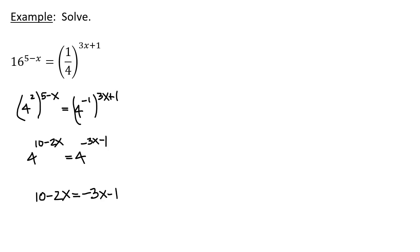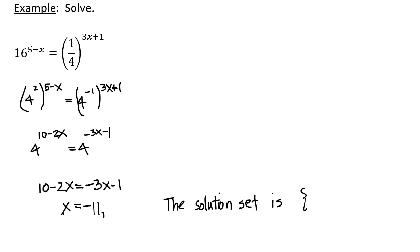So this gives me 10 minus 2x equals negative 3x minus 1. Add 3x to both sides, I get 10 plus x; subtract 10 from both sides, I get negative 11. The solution set is {negative 11}.